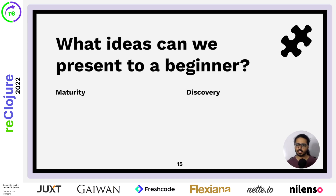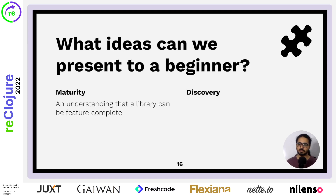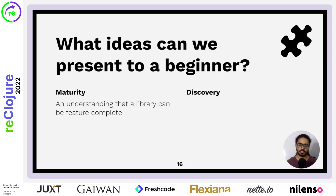There are some ideas that come when you learn another programming language and you come to Clojure and find things just a bit different. Maturity is one of them. The idea that libraries can just be feature complete — you don't need constant updates to a library. A commit was done a month ago? That's okay. You don't need a project updated every week for it to exist. You can just use a feature-complete and done library.